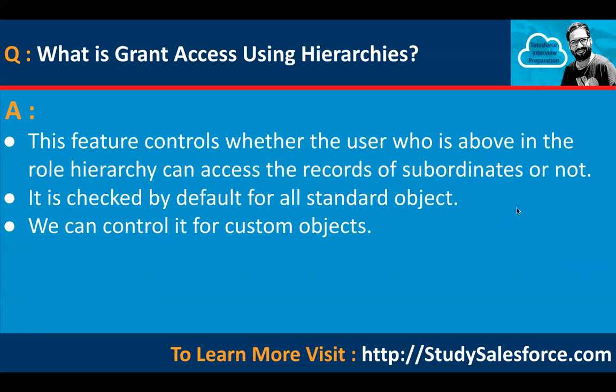What is 'Grant Access Using Hierarchies'? This option is available when you open sharing settings to apply OWD. It controls whether a user who is above in the role hierarchy can access the records of subordinates. It is checked by default for all standard objects, but you can control it for custom objects — allowing you to choose which objects are shared up the hierarchy, since you may not want to share all objects with managers.